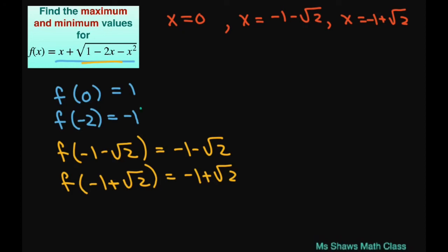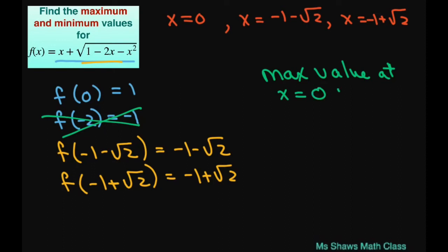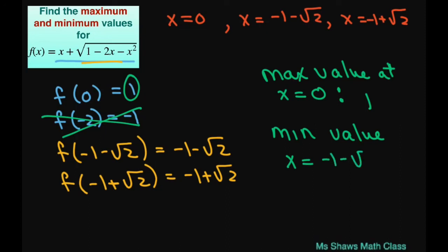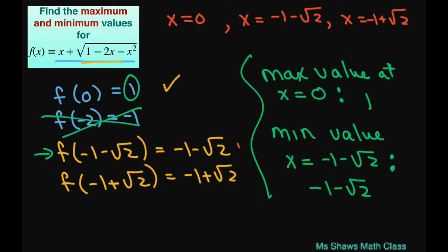So we have a maximum value at x equals 0, and that maximum value is 1. We have a minimum value at x equals negative 1 minus square root of 2, and that minimum value is negative 1 minus square root of 2. The maximum is the largest number and this is the smallest number.